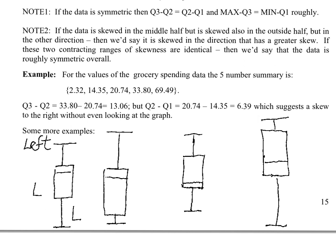Looking at the second example, within the interquartile range we see that the lower or left quartile is much more spread out than the upper or right one. So again, we have left skewness in the interquartile range. Now looking at the whiskers, the right whisker is much more spread out than the left, so this tells us that we have right skewness. How do we reconcile this? Since the left skewness within the interquartile range is about the same as the right skewness of the whiskers, these pretty much cancel each other out, and the overall distribution is symmetric.